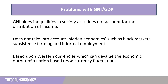There are many problems with using purely economic measures. Measures such as GNI do not account for the distribution of income — in many societies, wealth is unevenly distributed and concentrated into the hands of the elites. Economic measures also fail to take into account hidden economies that contribute to an individual's economic situation, including subsistence farming and agriculture, black markets or informal employment. A final problem is that these measures are based upon Western currencies, which means fluctuations in a nation's currency caused by instability, conflict or poor governance can make a nation's economic progress look worse.